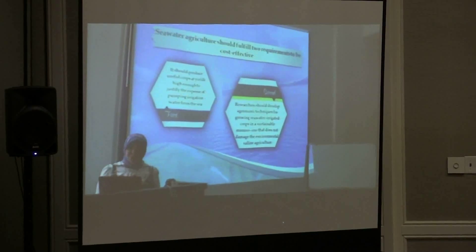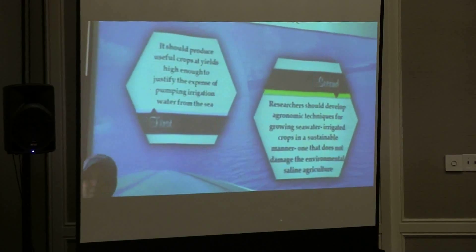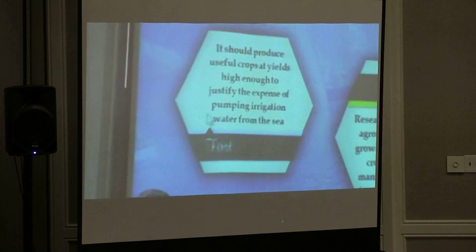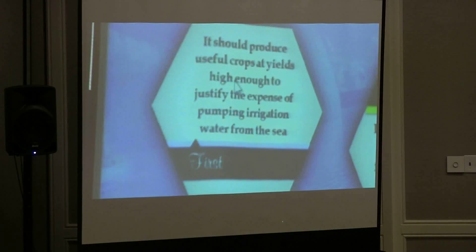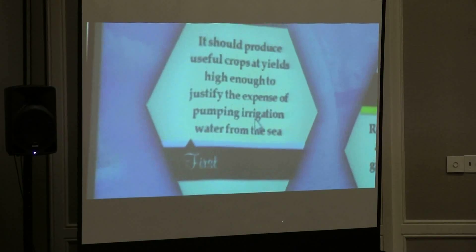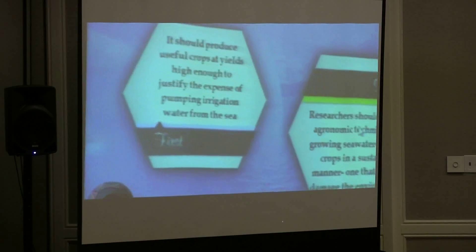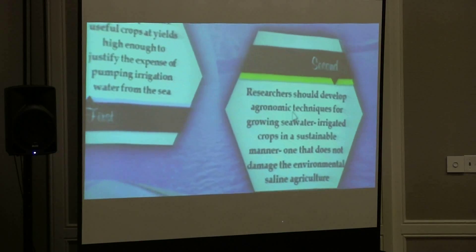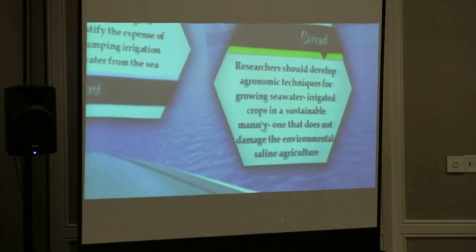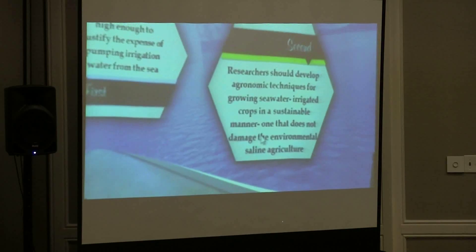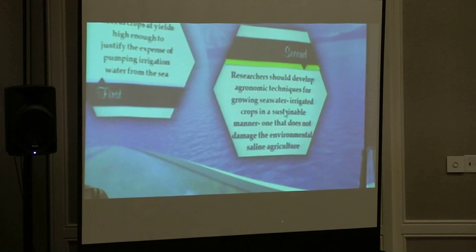In this matter, sea water agriculture should fulfill two requirements. To be cost-effective: first, it should produce crops and yields high enough to justify the expense of pumping irrigation water from the sea. Second, researchers should develop agronomic techniques for growing sea water irrigated crops in a sustainable manner that doesn't damage the environment.